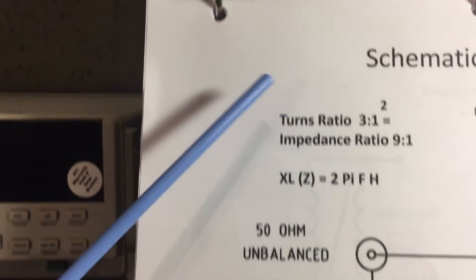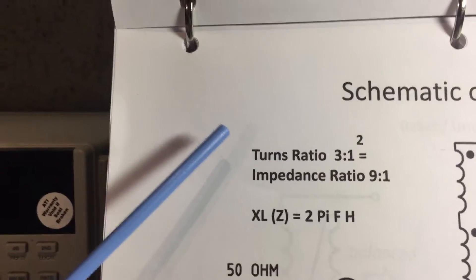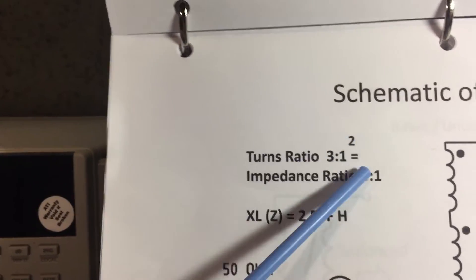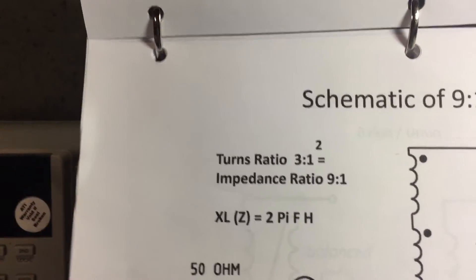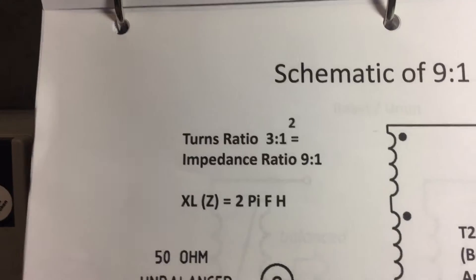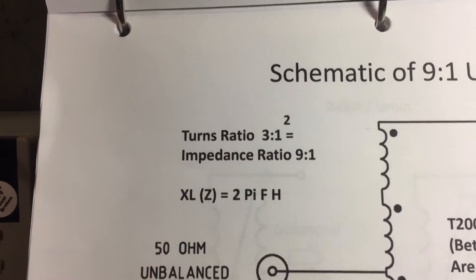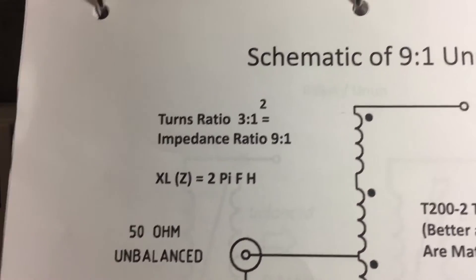So this is a pretty simple calculation. The turns ratio squared equals the impedance ratio. So three squared is nine, one squared is one. So that's how we get to a 9 to 1 ratio. And again, it transforms the 450 ohms to a 50 ohm impedance.